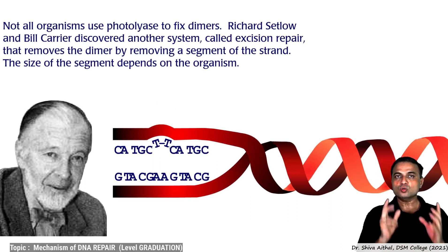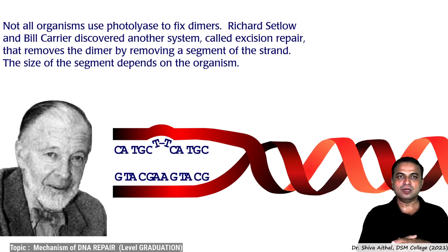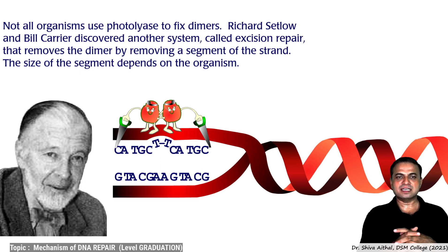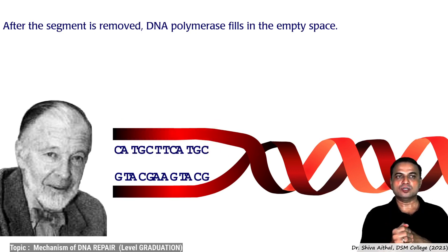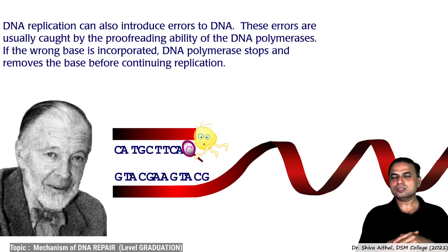Not all organisms have photolyase to fix thymine dimers. Scientists Richard Setlau and Bill Carrier discovered another system called excision repair. The excision repair system removes the dimer by cutting out a complete segment of the strand — the size depending on the organism. Enzymes cut the damaged length of DNA, remove it, DNA polymerase fills the gap, and ligase seals it.